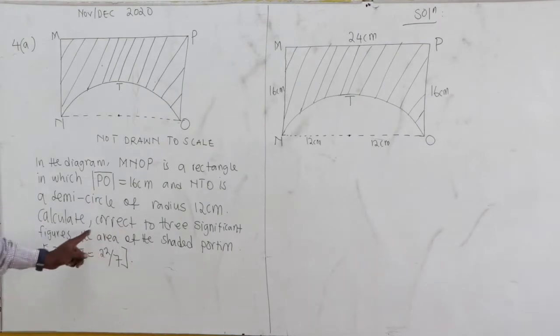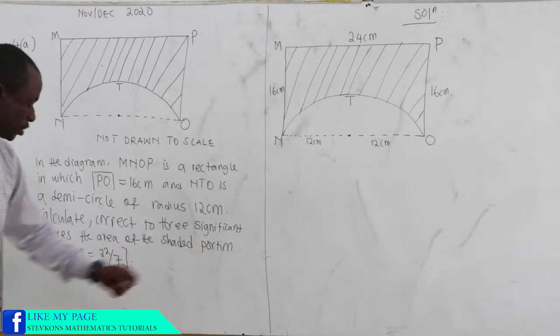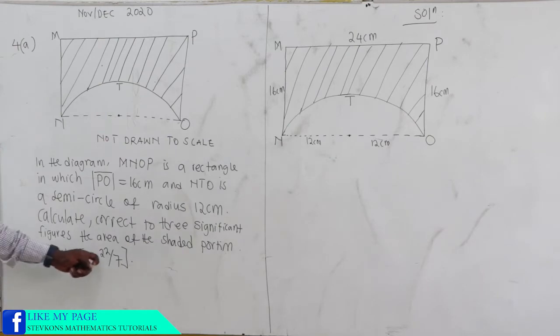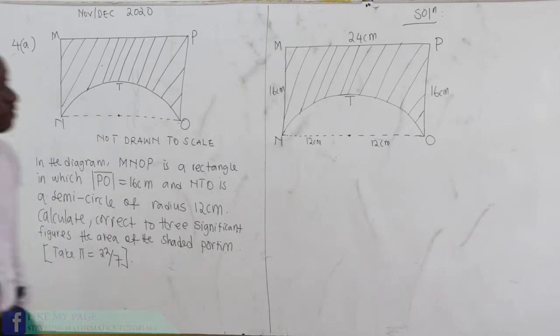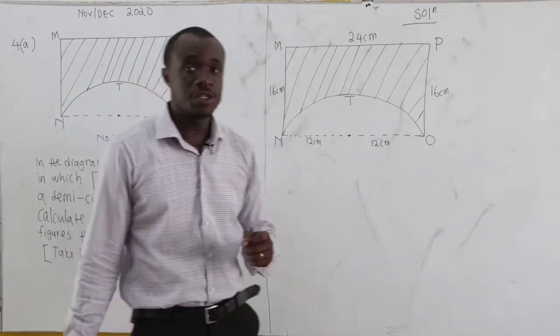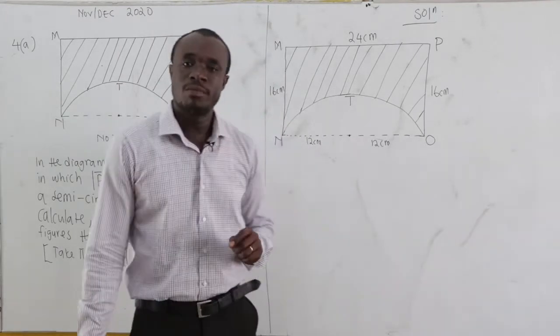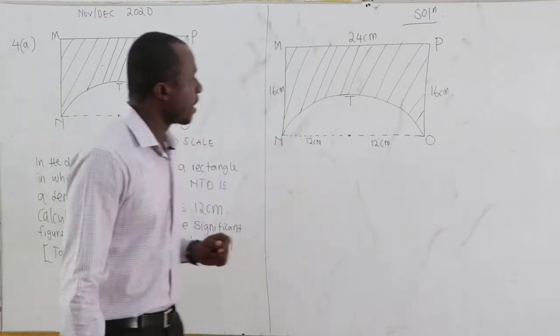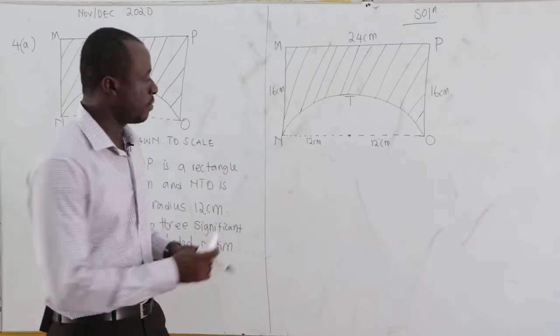Now we have been told, calculate correct to 3 significant figures the area of the shaded portion. We should take Pi to be equal to 22 over 7. So we want to find the area of the shaded portion. If you've not subscribed, please make sure that you do that.